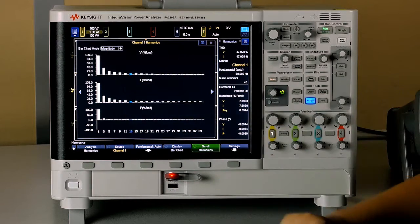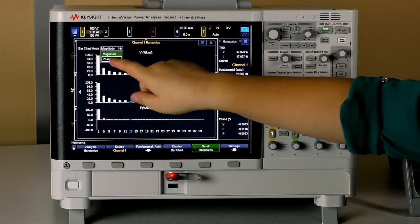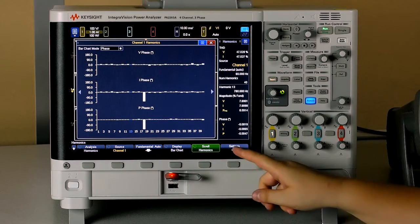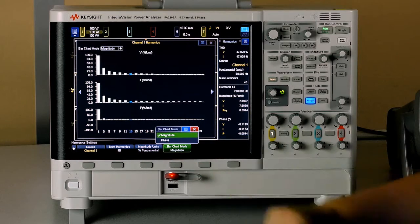If you want to change your bar chart mode from magnitude to phase, you can use this combo box, and there's your phase data, or you can go to settings, bar chart mode, phase, or magnitude.